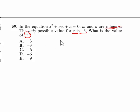Okay. Well, they've given us what x has to be, so why don't we rewrite this first off, plugging in minus 3 for x. So, minus 3 squared plus minus 3 times m plus n equals 0.